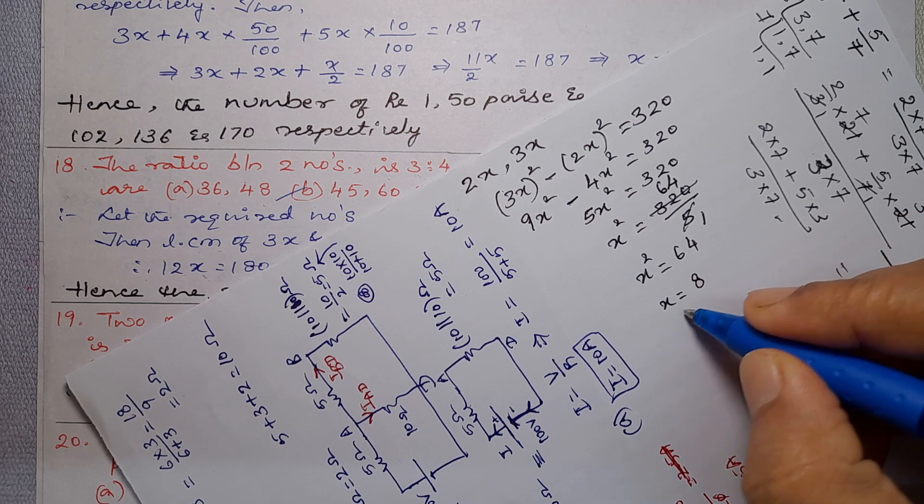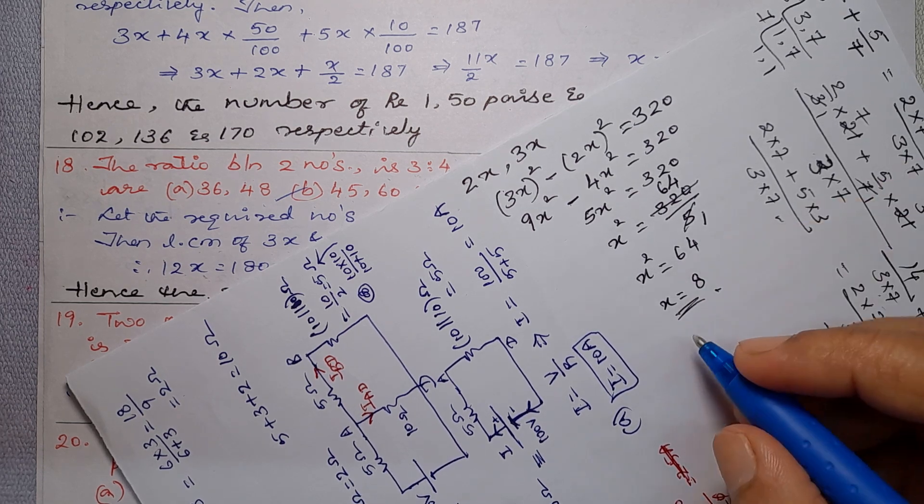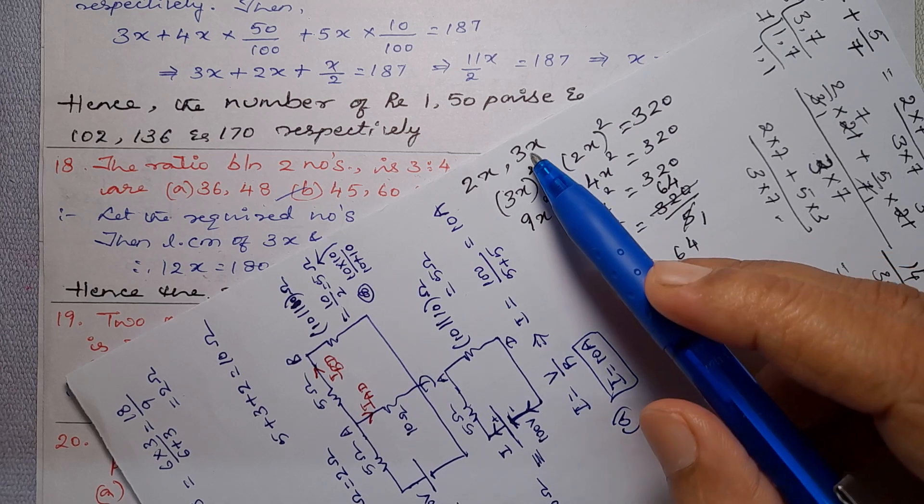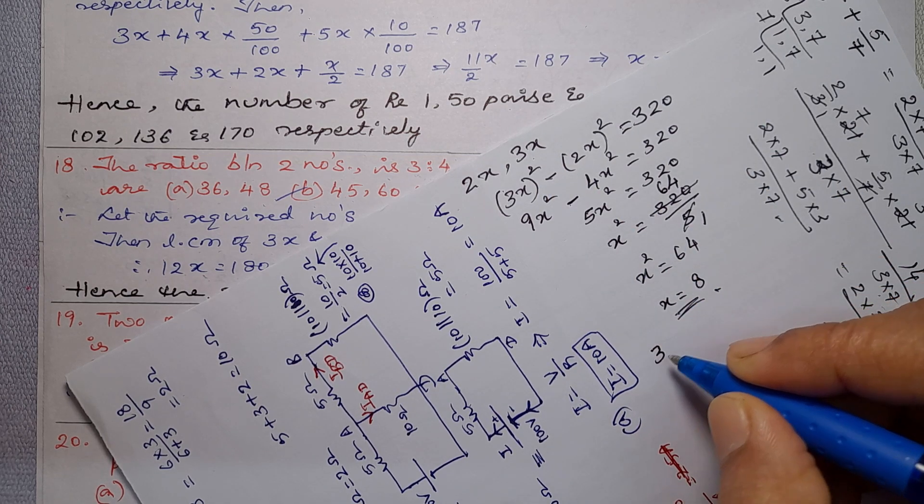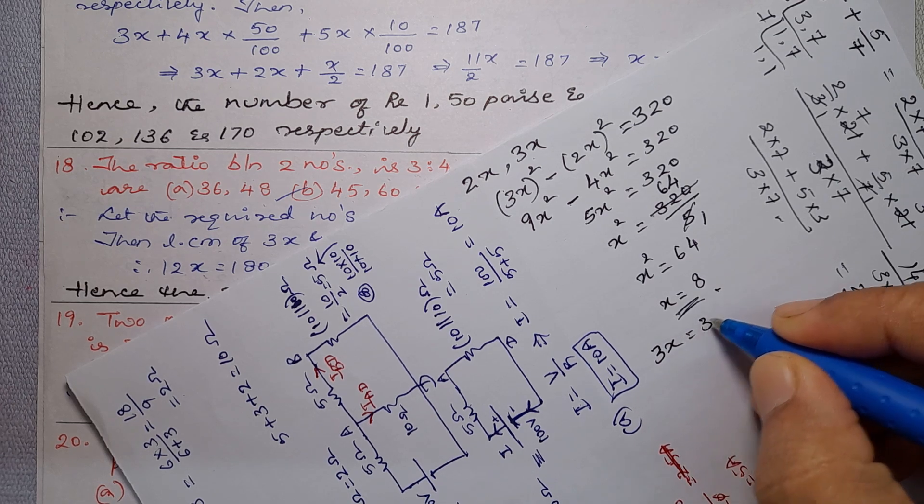But we consider positive values. So the first number is 3x and second is 2x. So 3 into 8.